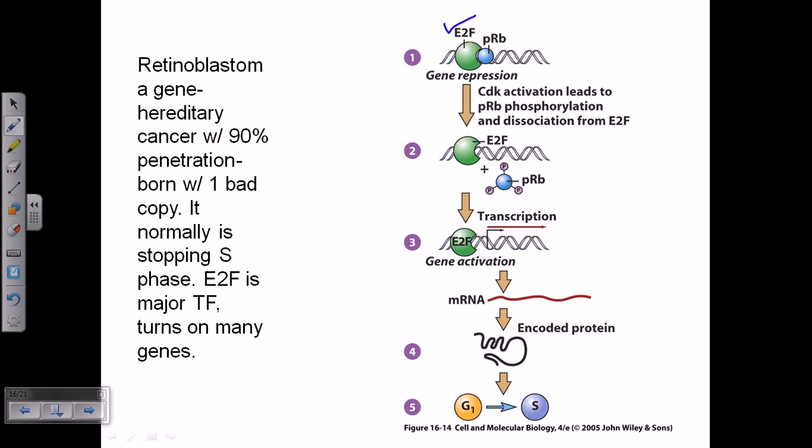Now in normal conditions, when we don't need the cell to divide, then this E2F is blocked. The activity of E2F is blocked by retinoblastoma protein, which is blue in color. Now what will happen when we need the cell cycle activity to go on?